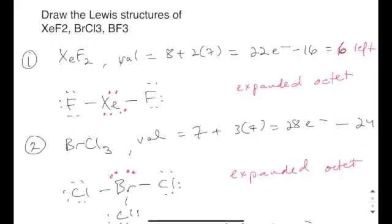So let's take a look at an example of how to draw Lewis structures for compounds that violate the octet rule. We're going to start with XeF2 here. And just like any Lewis structure, we would begin with looking at the valence electrons. Xenon is eight, and then fluorine is seven, and there's two of them. So it adds up to be 22.